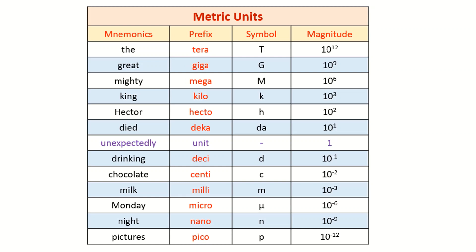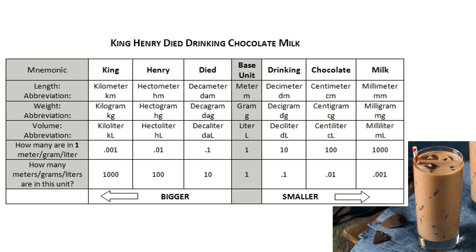You don't need to memorize all the prefixes, but here are some mnemonics you may use. You may remember: 'The great mighty King Hector died unexpectedly drinking chocolate milk Monday night.' I prefer this shorter mnemonic using the more commonly used prefixes: 'King Henry died by drinking chocolate milk.' King represents kilometer, Henry represents hectometer, Died for decameter, By is for the base unit — meter for length, gram for weight, liter for volume — Drinking for decimeter, Chocolate for centimeter, and Milk for millimeter.